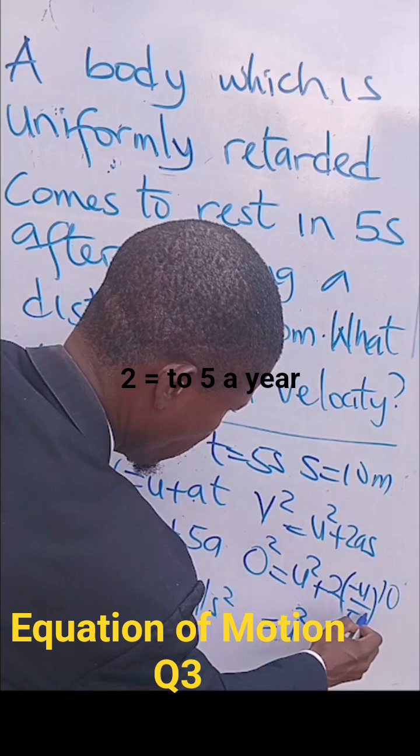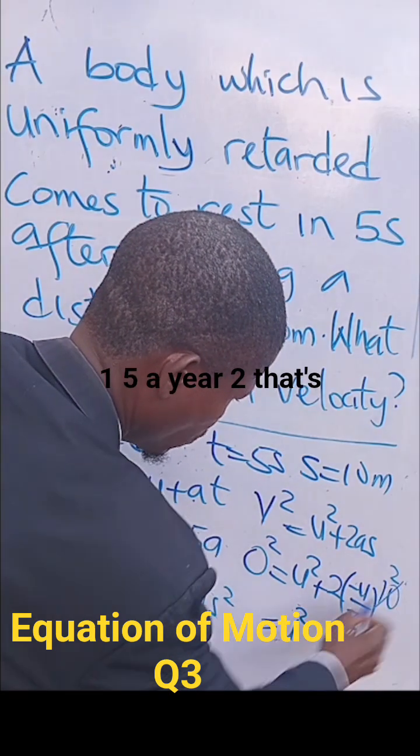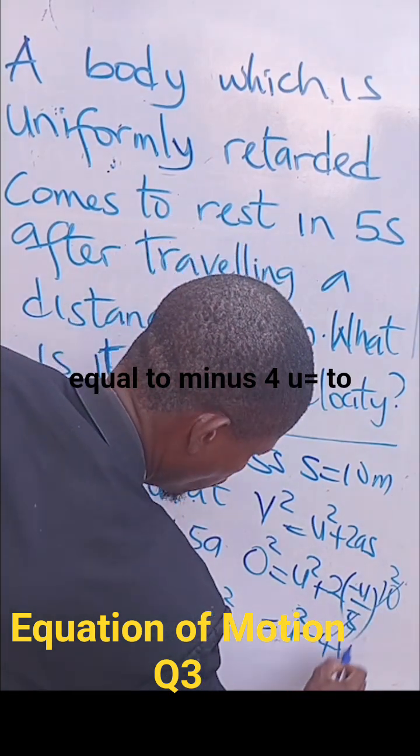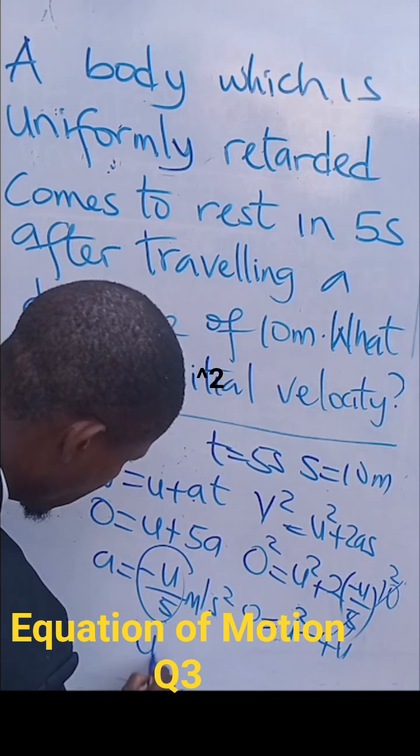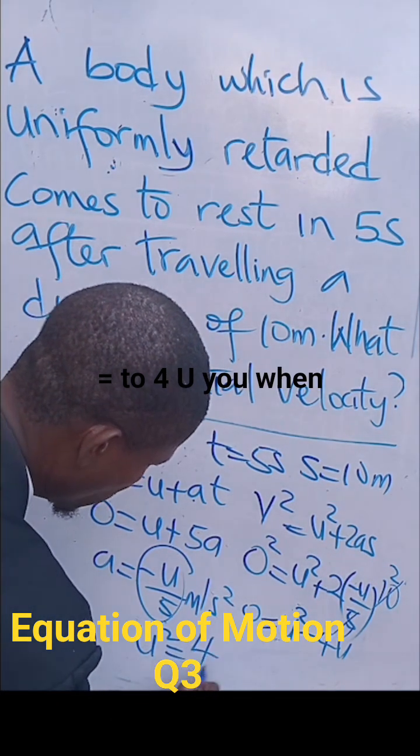That would be U squared equal to, 5 times 2, that's equal to minus 4U equal to 0. So, that would be U squared equal to 4U.